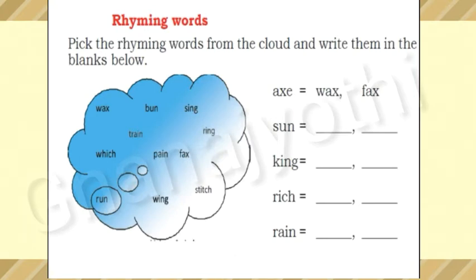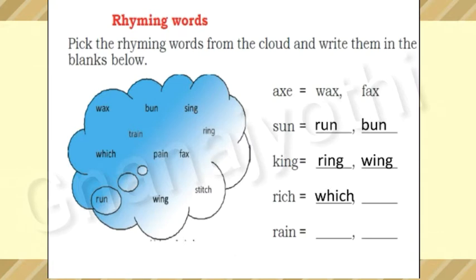Next — 'sun.' We need to pick the rhyming words from the cloud: Run, Bun. Next — 'king.' Rhyming words of king: Ring, Wing. Next — 'rich.' The rhyming word of rich is Witch, Stitch.